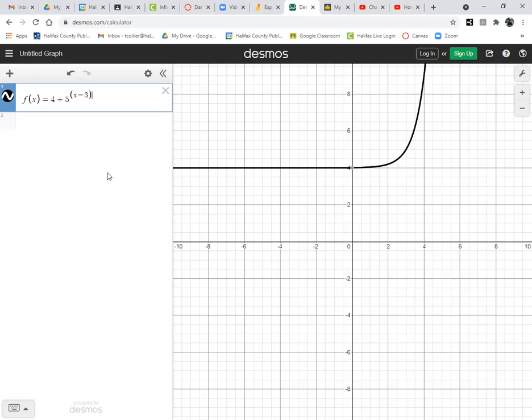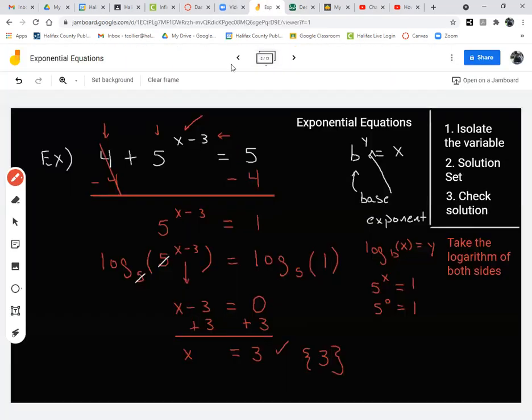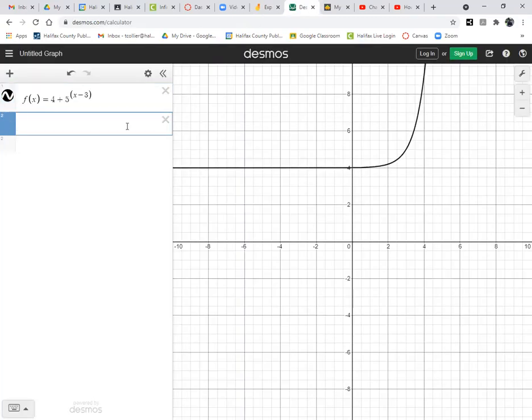What about the right side of the equal sign? That was 5. So I only need to graph g(x) as equal to 5, because that's what's on the right side.